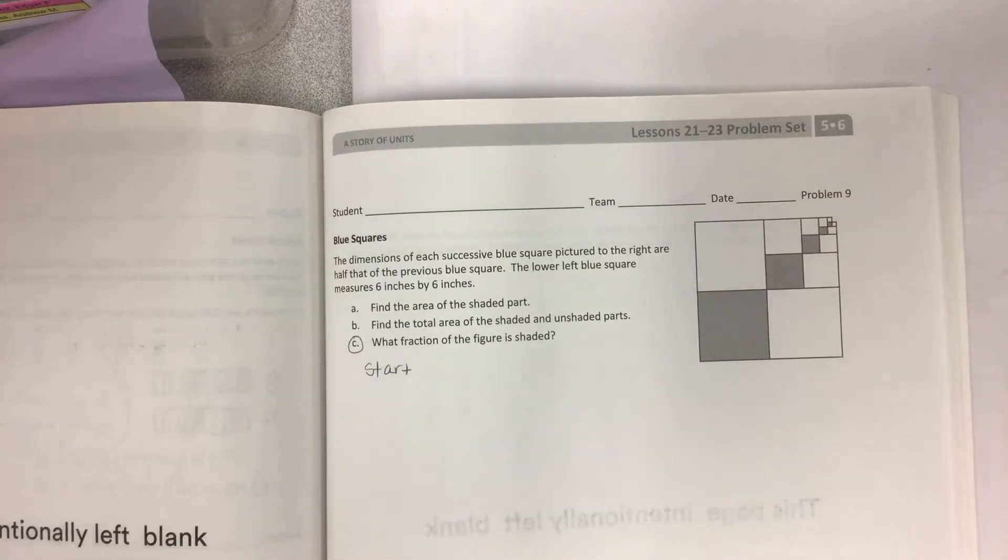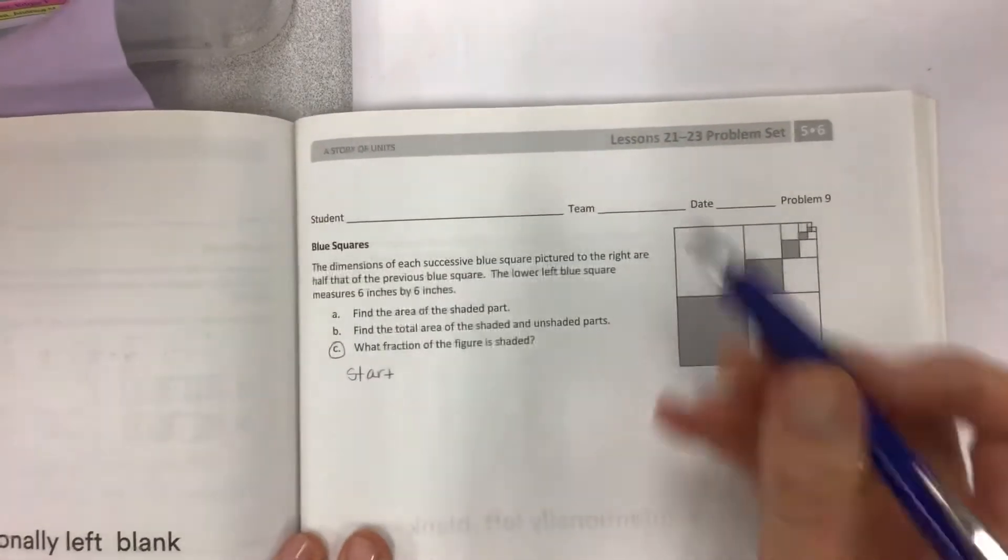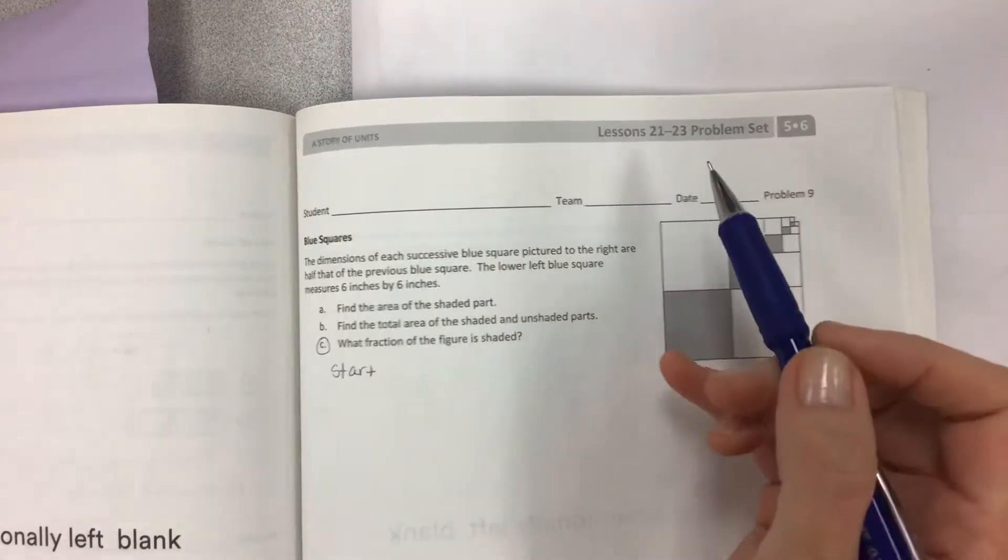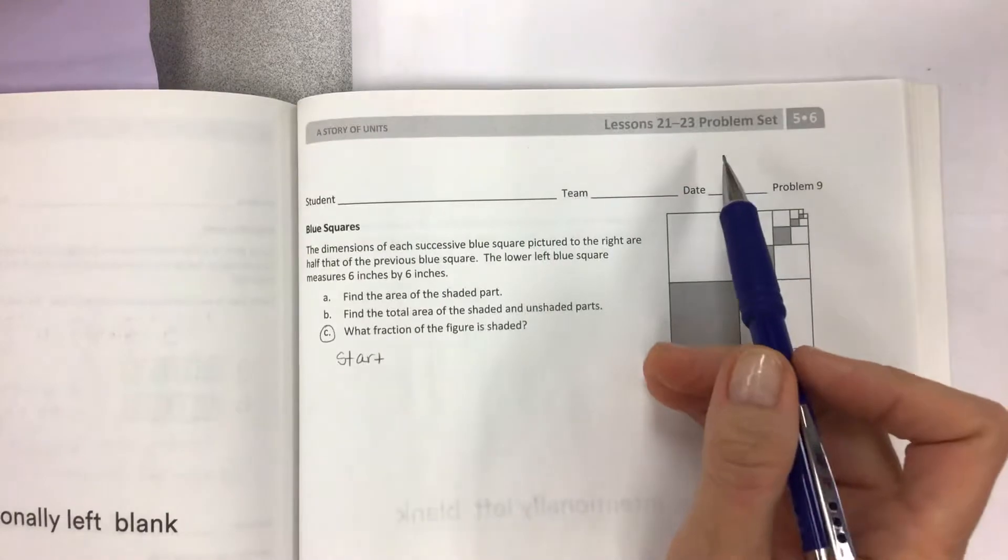Hi there kids! This is the last problem in the lesson 21 through 23 section of the problem set where we have nothing but super complicated questions. The objective is to make sense of complex multi-step problems, which you can't see because it's so tiny and then it goes super blurry because that's fun.